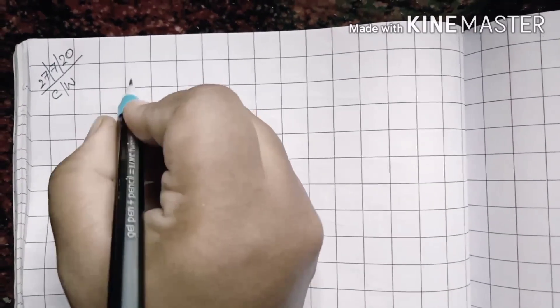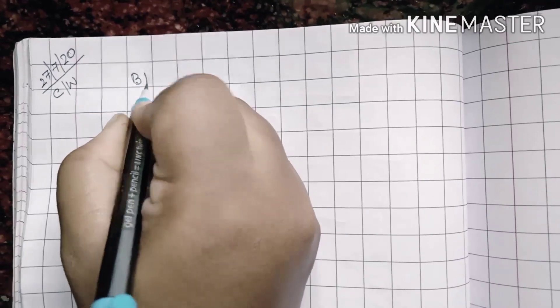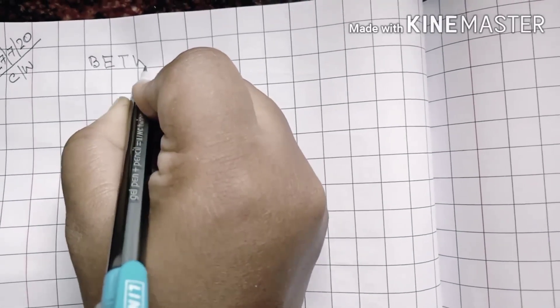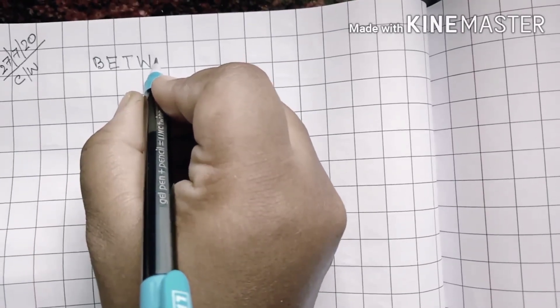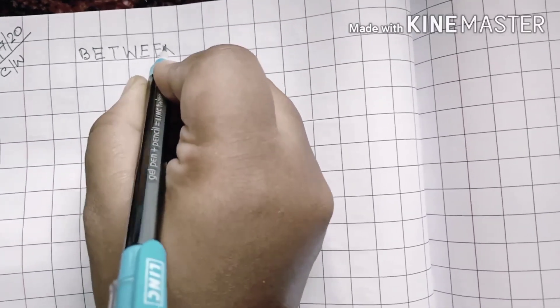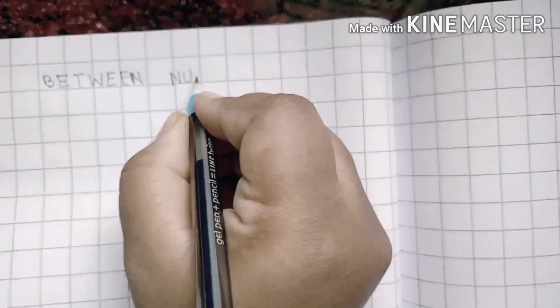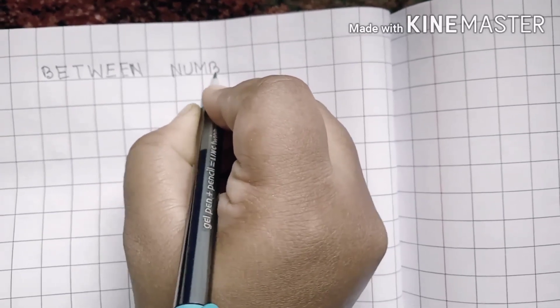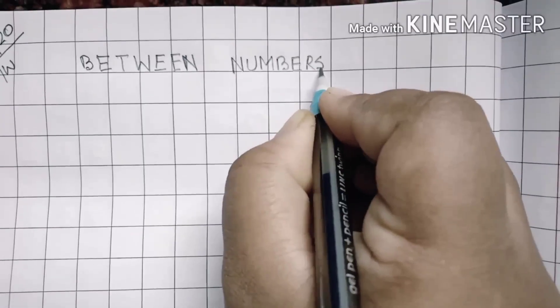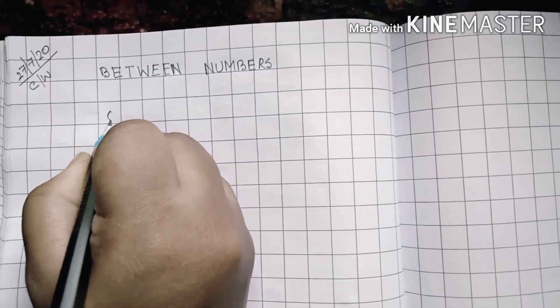You leave this line and then start writing between numbers. So B-E-T-W-E-E-N between, N-U-M-B-E-R-S, between numbers.